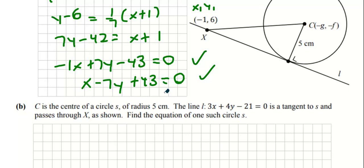We're given the radius and we're given the equation of a line that's a tangent to the circle.